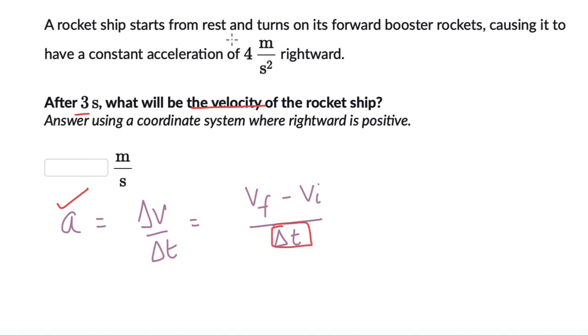Well yes, if we read the question it says the rocket ship starts from rest. So initial velocity really is just 0. So when we substitute these numbers, we get 4 equals v_f divided by 3, so the final velocity comes out to be equal to 12 meters per second.